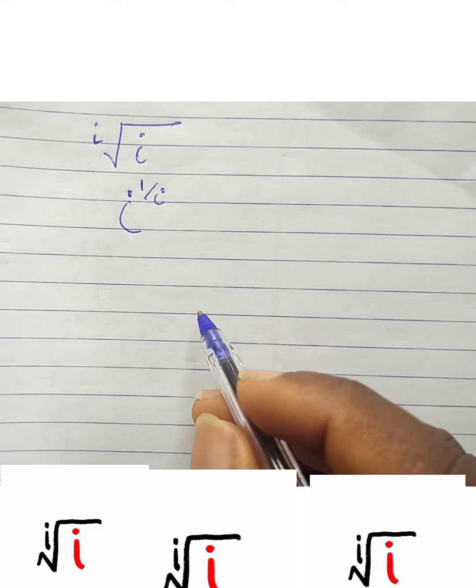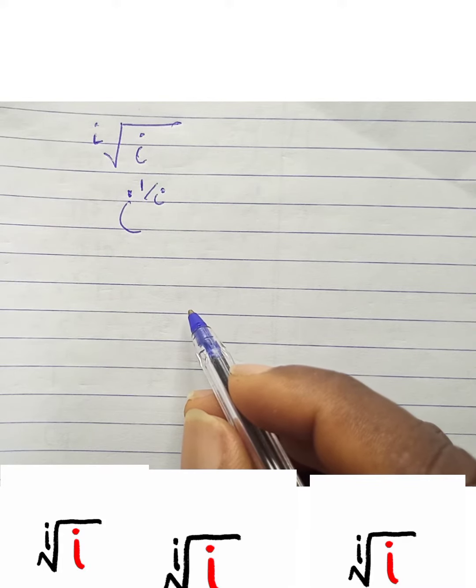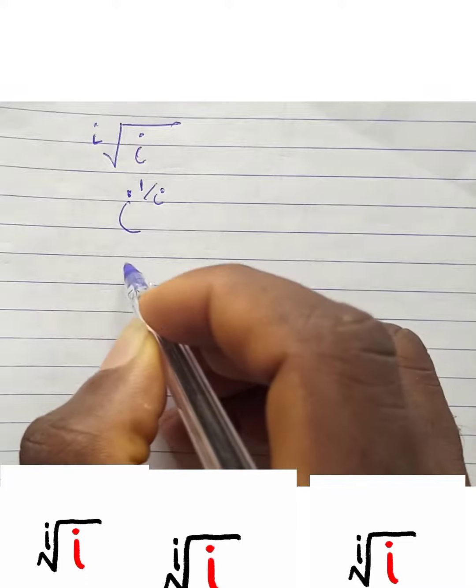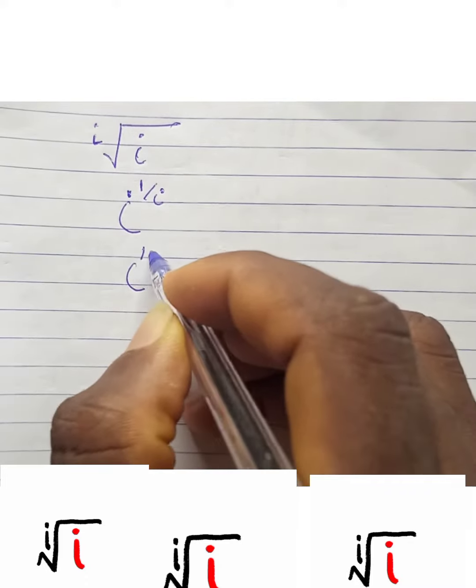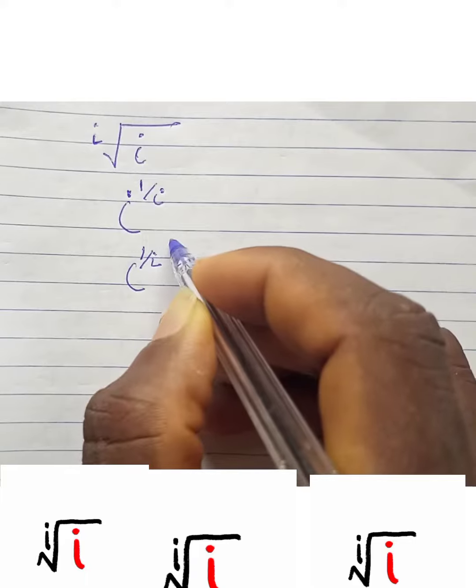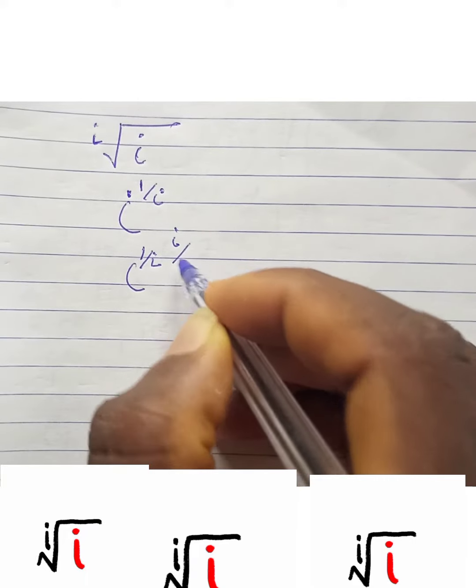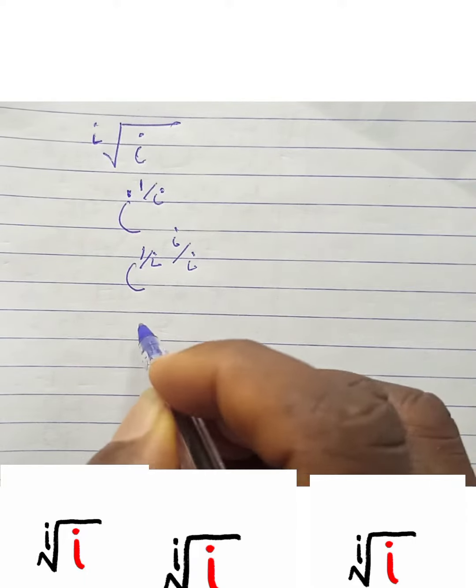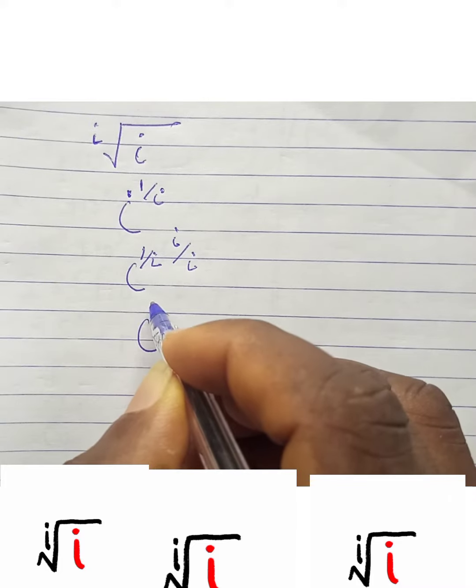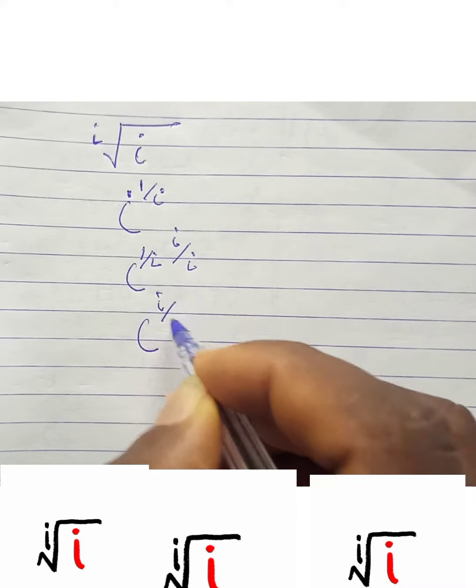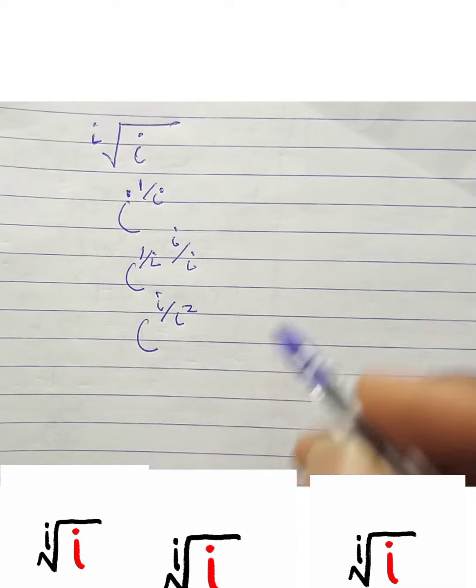So we can multiply the parts both in numerator and denominator by i. So we're going to have i into 1 over i times i, divided by i. So we're going to have i raised to i into i over i squared.